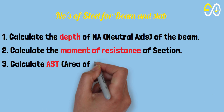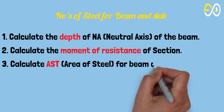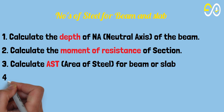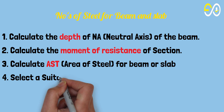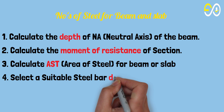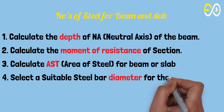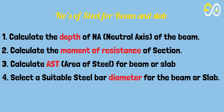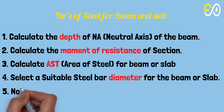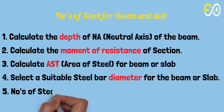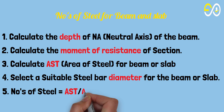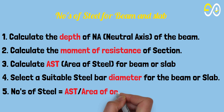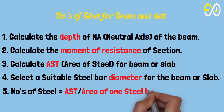3. Calculate the area of steel for the beam or slab. 4. Select a suitable steel bar diameter for the beam or slab. 5. Number of steel bars equals the area of steel divided by the area of one steel bar.